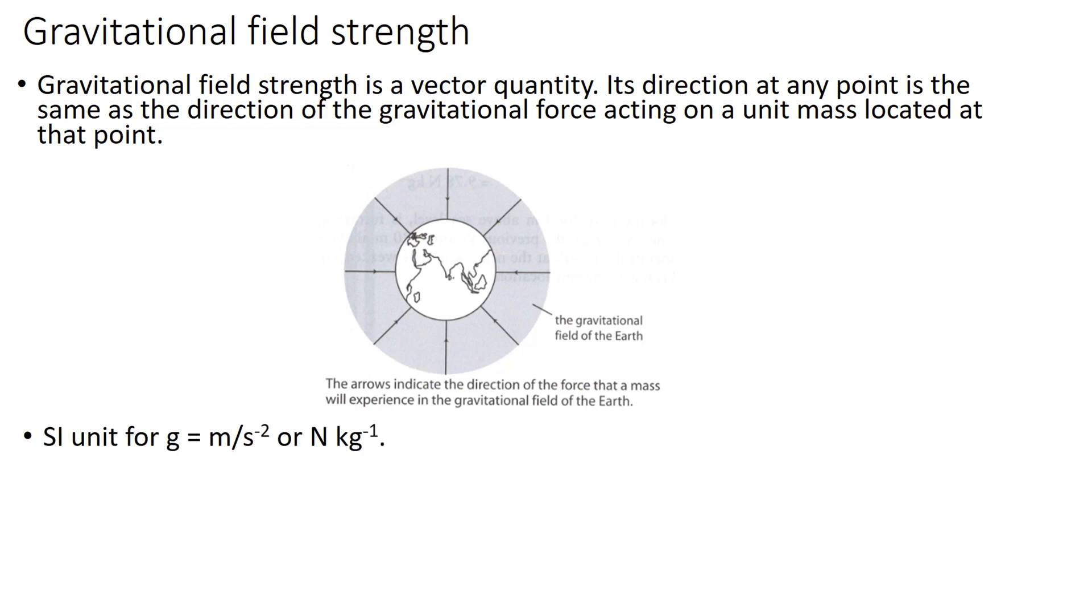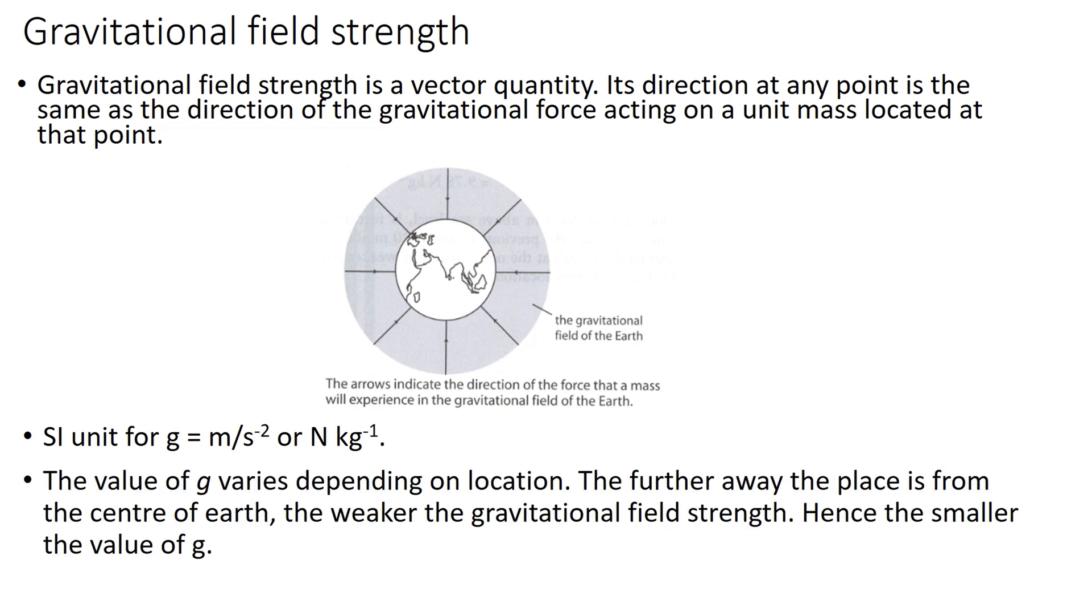The SI unit for g is meters per second squared or Newton per kg. The value of g varies depending on location. The further away the place is from the center of gravity, the weaker the gravitational field strength, hence the smaller the value of g. Usually, we assume g as a constant value of 10 meters per second squared.